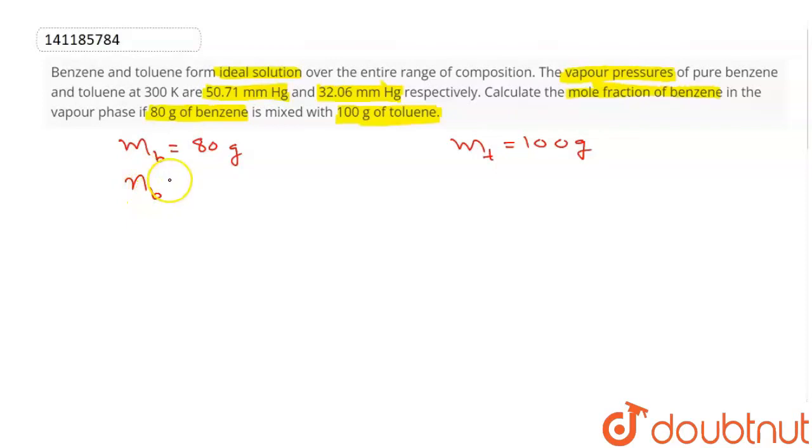You need to find what is the mole fraction of benzene in the vapor phase. So first we calculate benzene's mole fraction, calculate toluene's mole fraction, and then we will proceed.